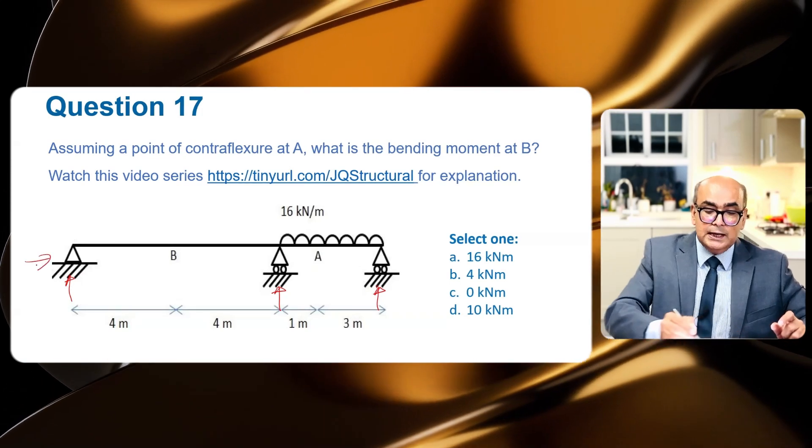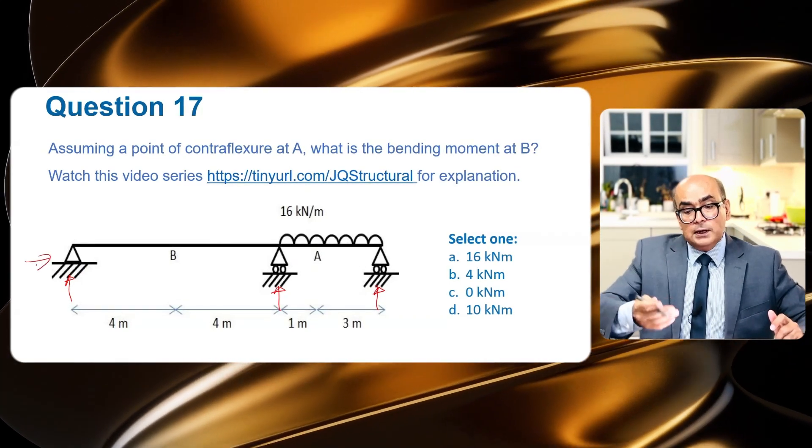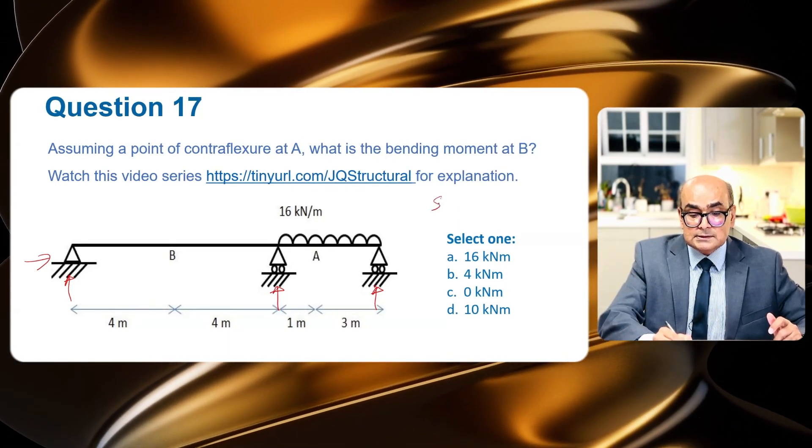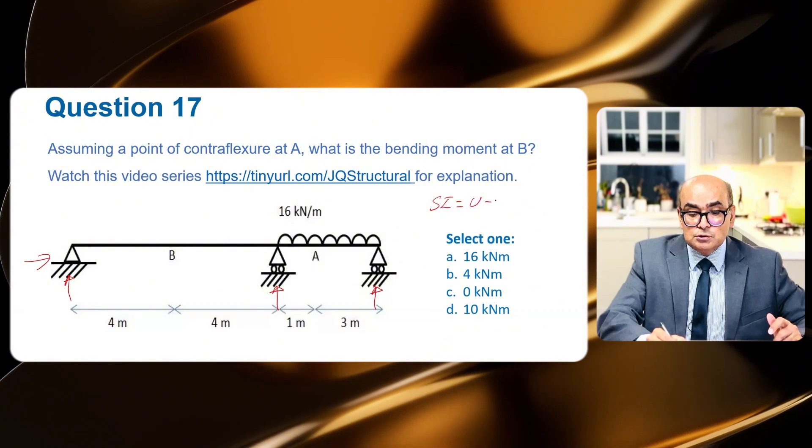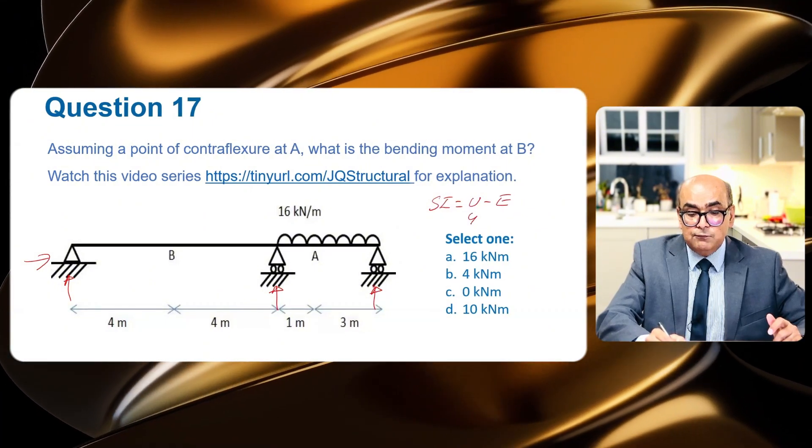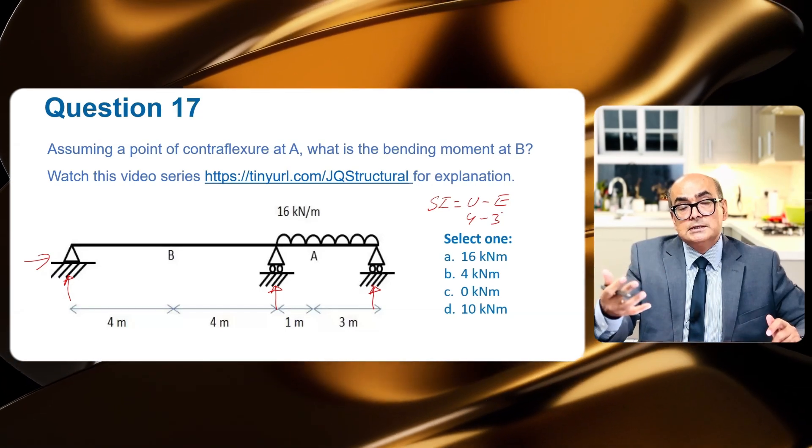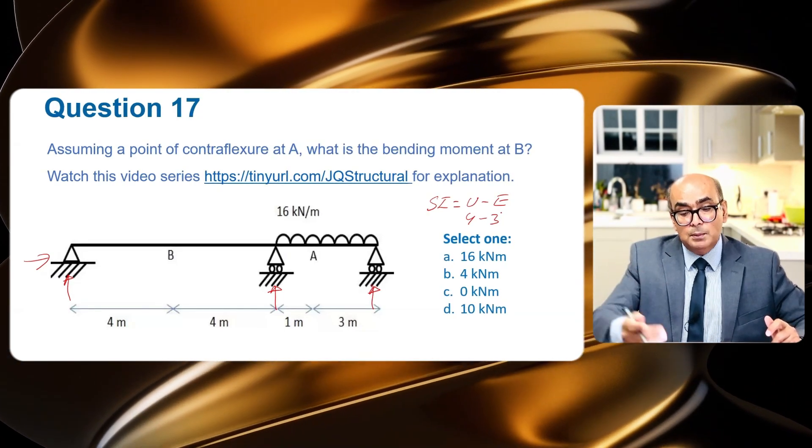There are four unknowns and equilibrium equations are three. So SI will be equal to U minus E. So four minus three. Equilibrium equations are summation of horizontal, vertical forces and summation of moment equal to zero.